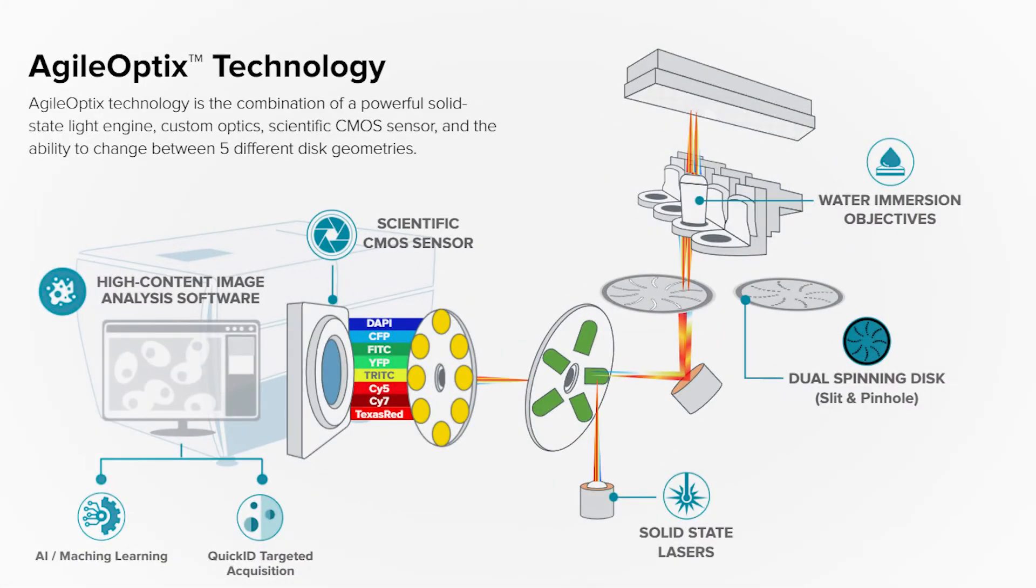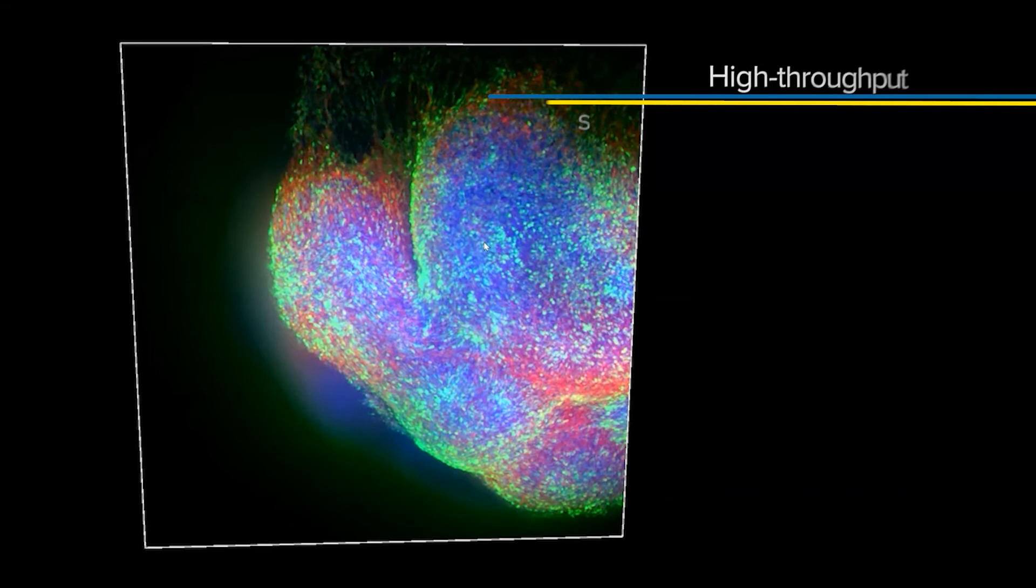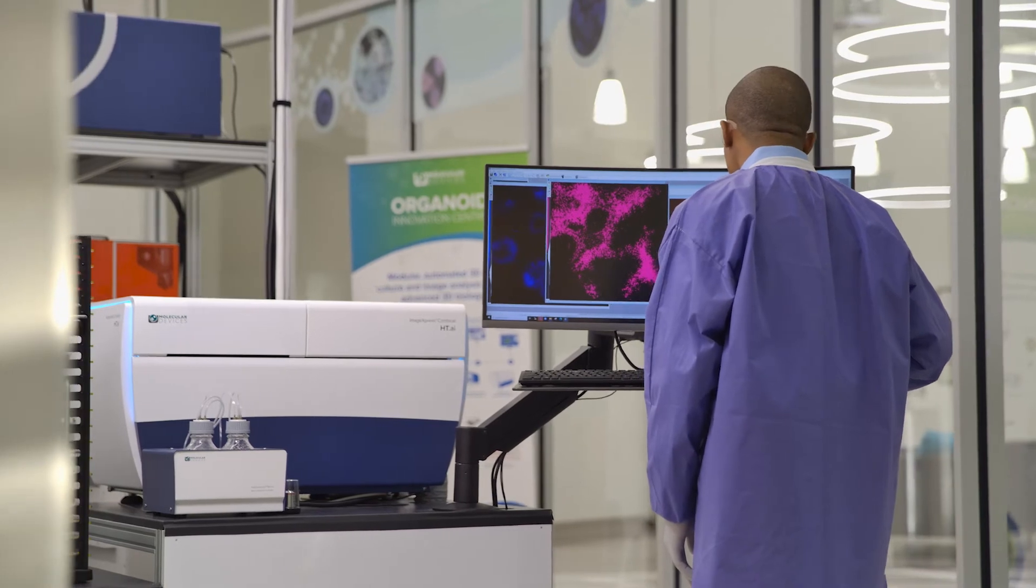This advanced high-content imaging system boasts a 7-channel laser light source with 8 imaging channels. These 8 imaging channels enable highly complex assays while maintaining high throughput by using shortened exposure times, giving you better insight into your research.